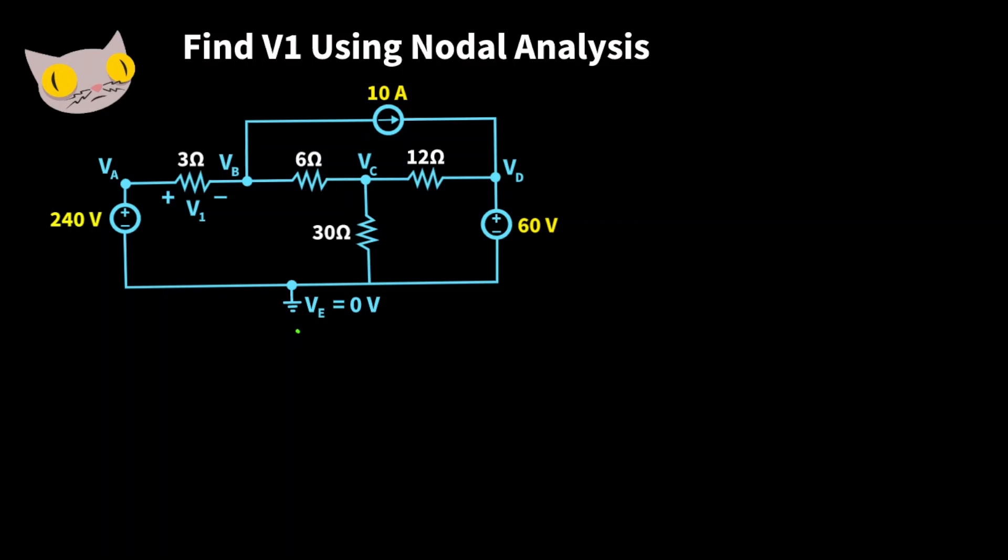A voltage source or any voltage drop has polarity denoted by positive and negative. The positive is the high potential and the negative is the low potential. And to illustrate this let's take a look at the 240 volt source.